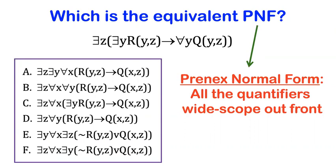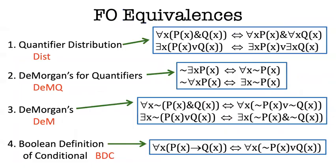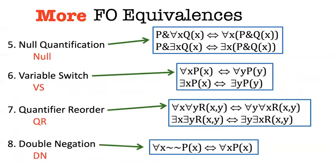What you should be doing is giving a chain of equivalence to prove this. You should be citing as justifications in each transformation one of these first-order equivalence principles. It could be one from this list, like DeMorgan's for quantifiers or the Boolean definition of the conditional, or you might also need any of these principles too.